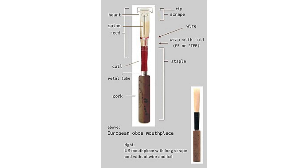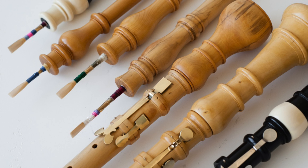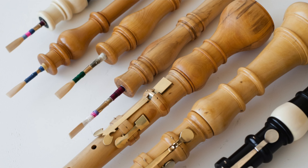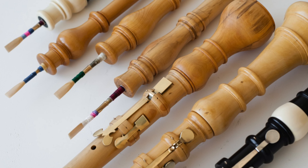What about the embouchure? The embouchure — the way an oboist shapes their mouth and lips around the reed — plays a crucial role in producing a stable pitch. Skilled oboists develop a consistent embouchure technique through practice and experience, which helps maintain the stability of the instrument's pitch across different musical passages and dynamics.